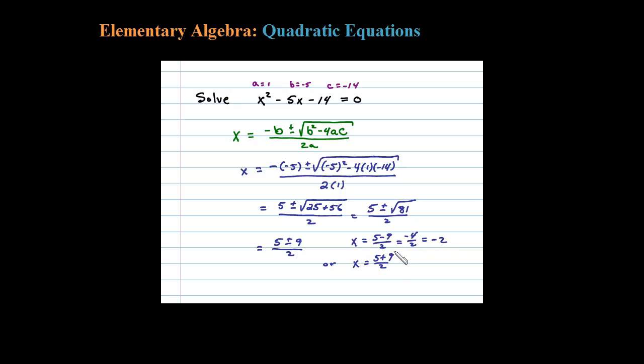And here where I'm adding, 9 plus 5 is 14, 14 divided by 2 is 7. So the two solutions to this quadratic are going to be then negative 2 and 7.